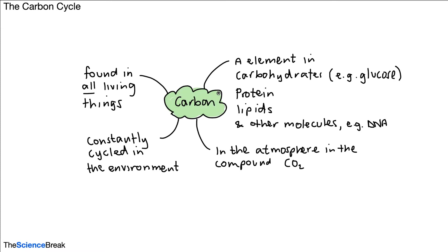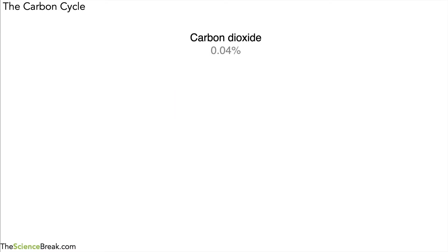So we can take a look and see how the carbon is cycled in the environment, and build up a picture step by step. Carbon dioxide is found in the atmosphere — it's about 0.04% of the atmosphere. But how does that carbon in the carbon dioxide get into living things?